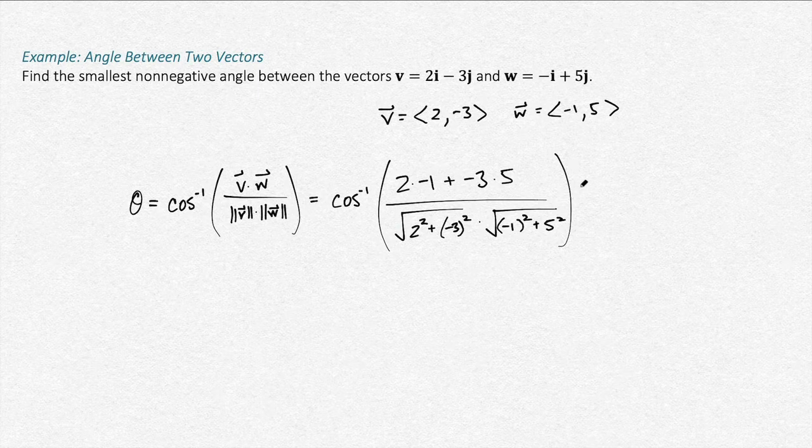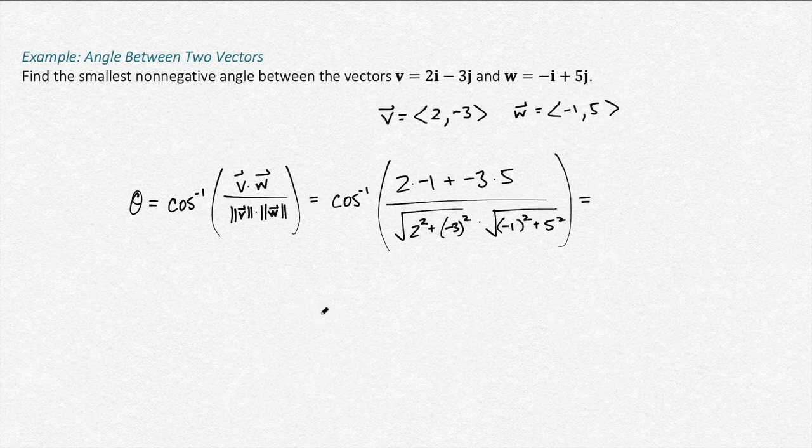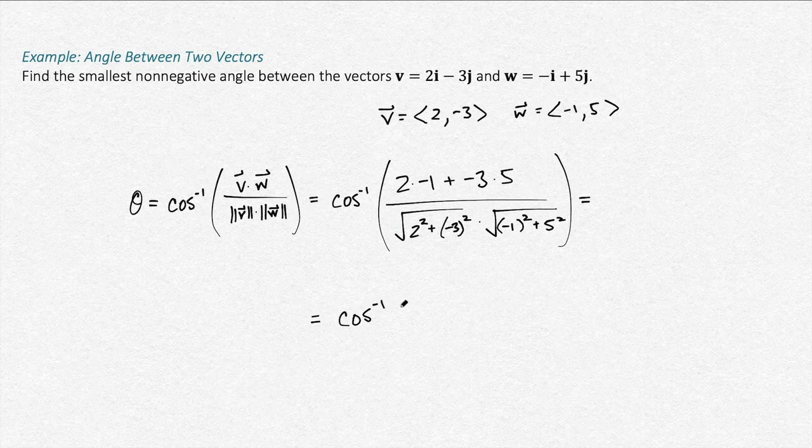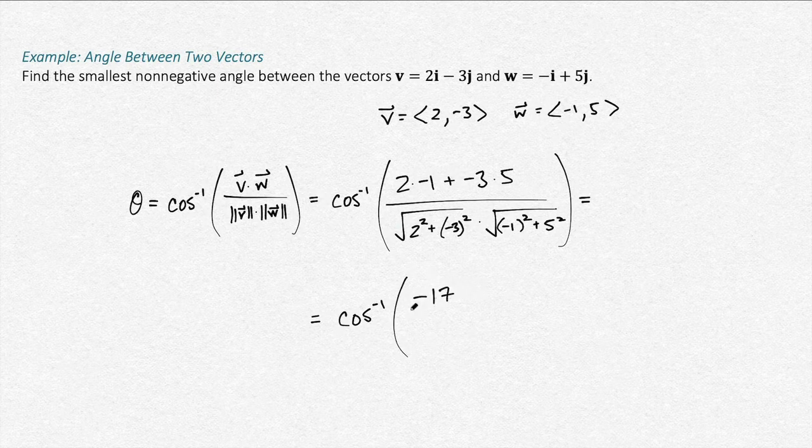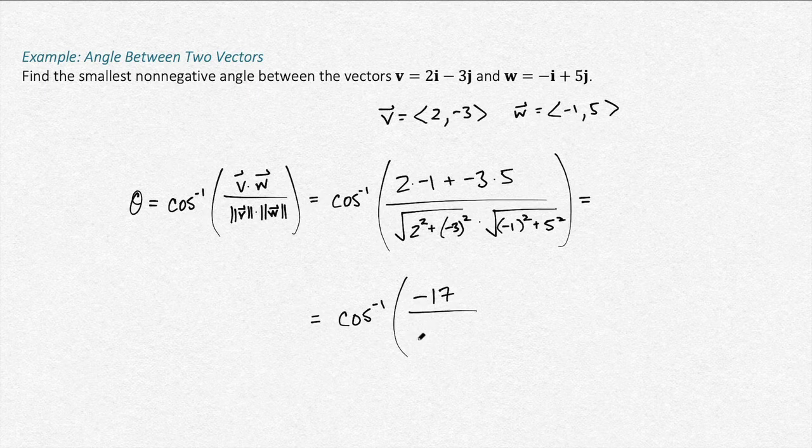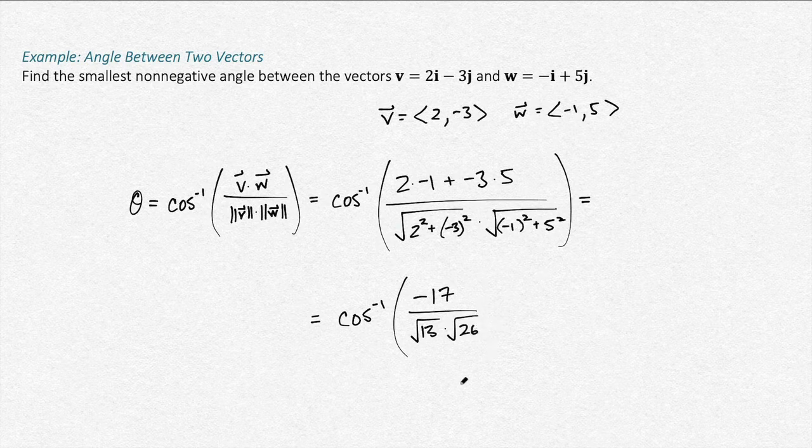So now I just need to find these numbers here. Let's come down here. We've got the cosine inverse. This is negative 2 minus 15, that's negative 17 over the square root of 4 plus 9, that's the square root of 13. And here is the square root of 1 plus 25, which is 26.